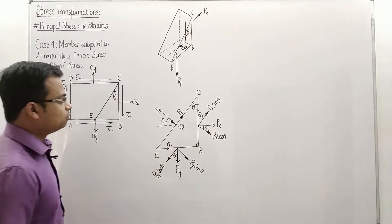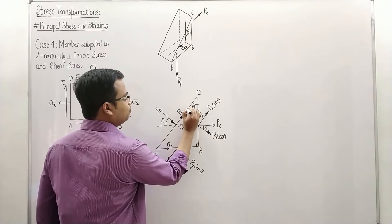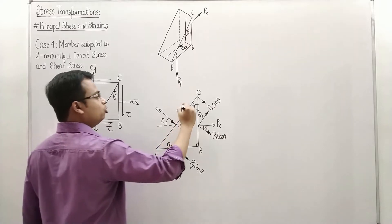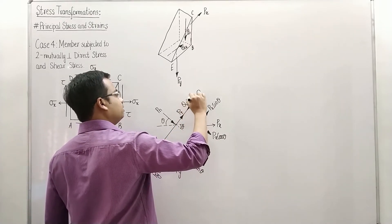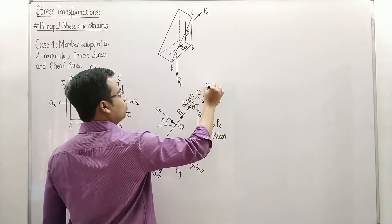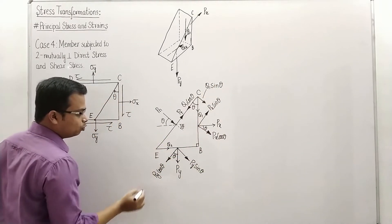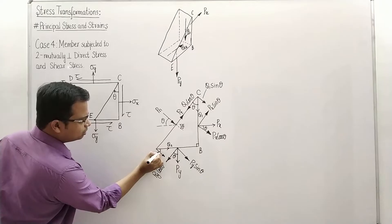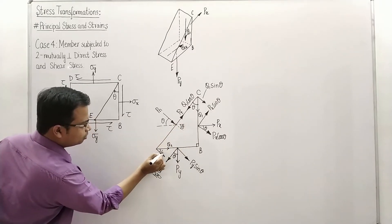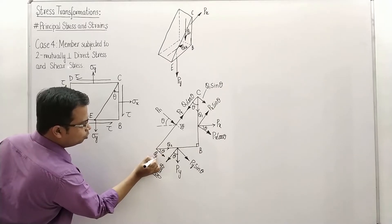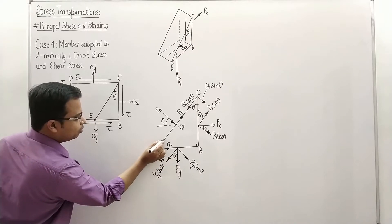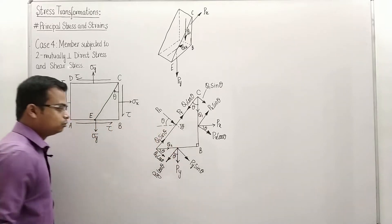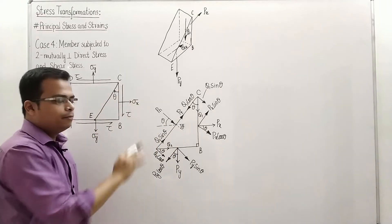Now we need to resolve Q1 and Q2. Q1 has a component along Pn equal to Q1 cosine theta, and along Pt equal to Q1 sine theta. Q2 similarly has two components: Q2 cos theta along one direction and Q2 sine theta along the other. We now have everything worked out and just need to substitute into the formula.